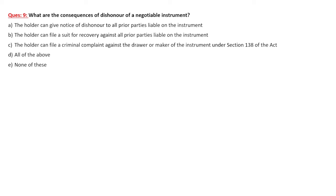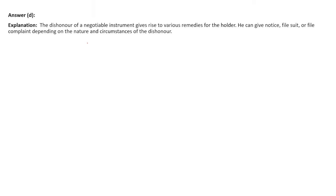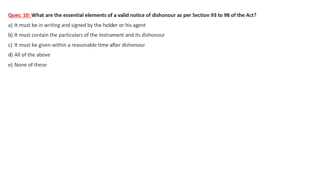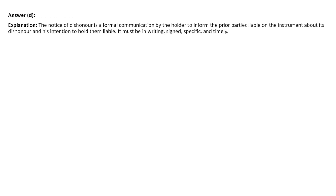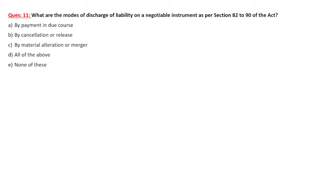The consequences of dishonor under Section 138 — the holder gives a notice of dishonor to all prior parties, files a suit, and files a criminal complaint. What are the essential elements of a valid notice as per Sections 93 to 98? It must be in writing and signed by the holder, must contain all details of the instrument, and must be given within reasonable time after dishonor — within 30 days.